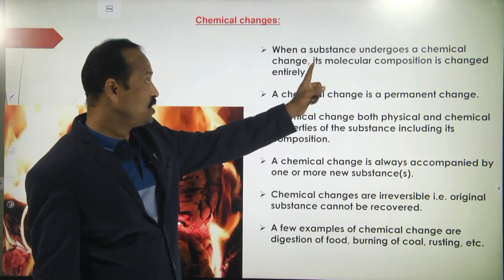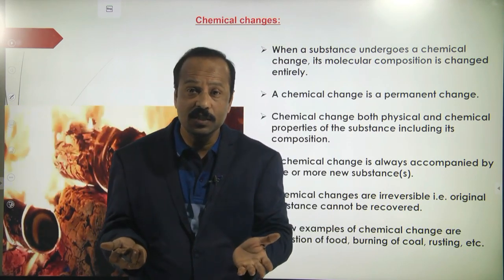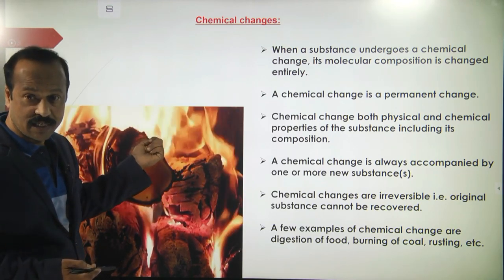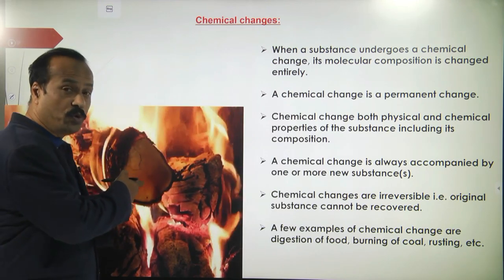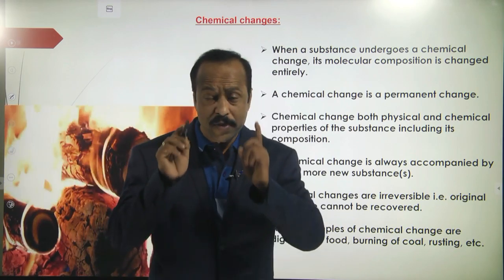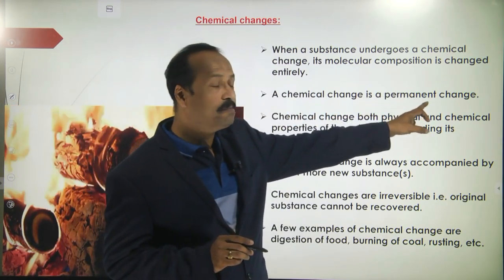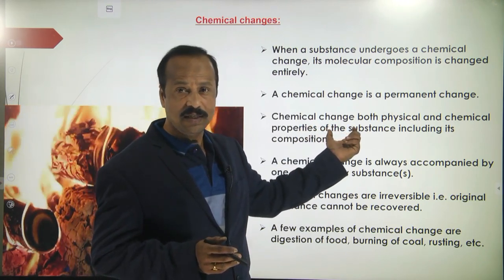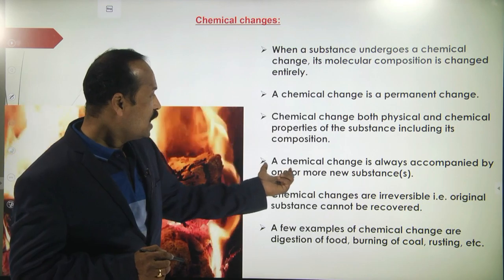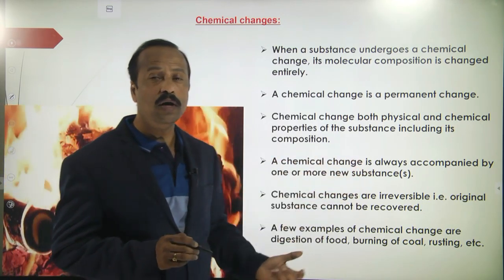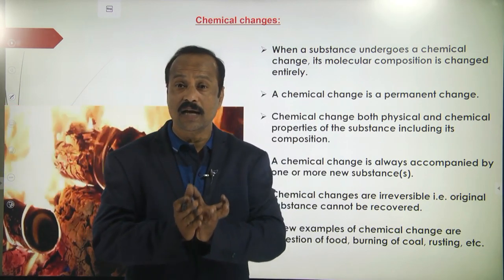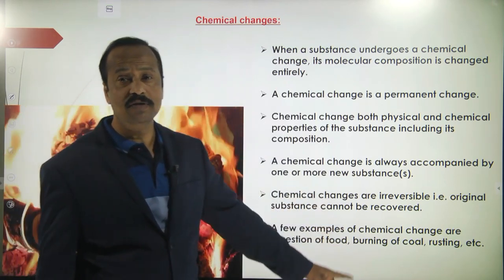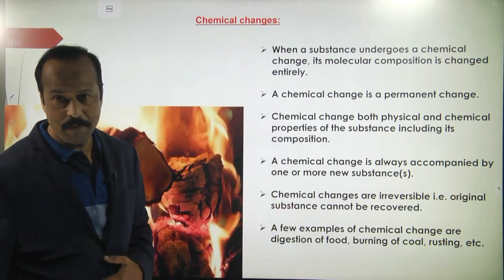But in a chemical change, the composition changes and new substances are formed. When burning wood, carbon is reacting with oxygen and forming carbon dioxide gas. Can this carbon dioxide convert back into wood? It is not possible. So this is a permanent change. When undergoing a chemical change, both physical and chemical properties may change. A chemical change is always accompanied by one or more new substances — burning wood produces carbon dioxide gas, smoke, and ash. It is irreversible, meaning it cannot be reversed. This is called a chemical change.